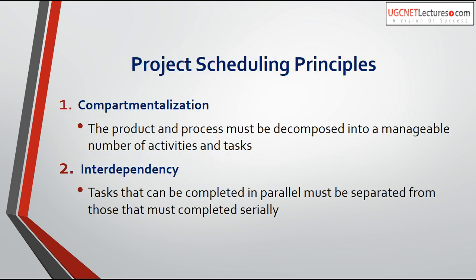Now let's come to the actual project scheduling process. The first phase is compartmentalization. In compartmentalization, the product and process must be decomposed into a manageable number of activities and tasks. What we do first is divide the product and process into tasks. For example, if using the waterfall model, you divide the process into parts: problem statement, requirement analysis, feasibility study, designing, coding, and so on. These are the activities.